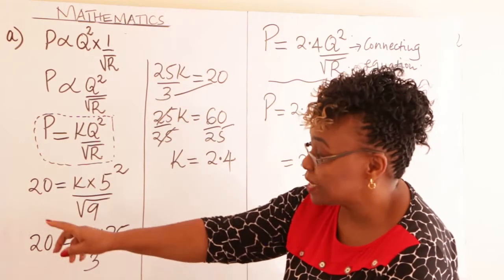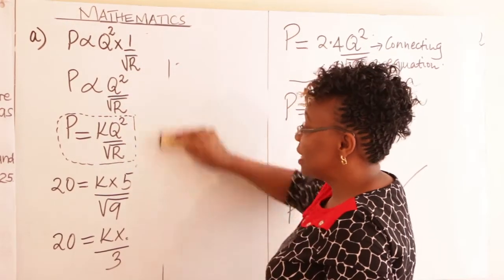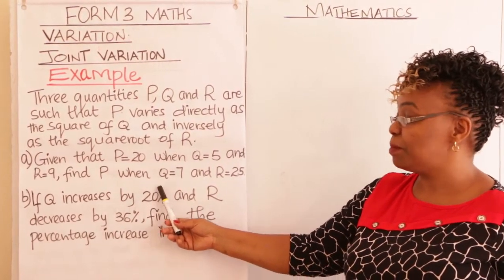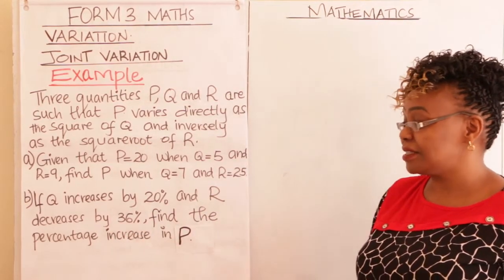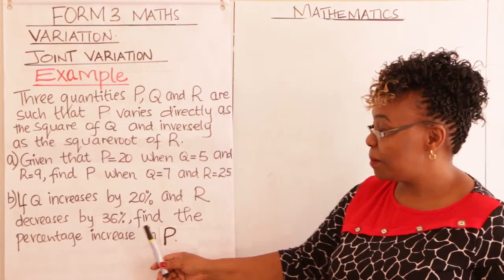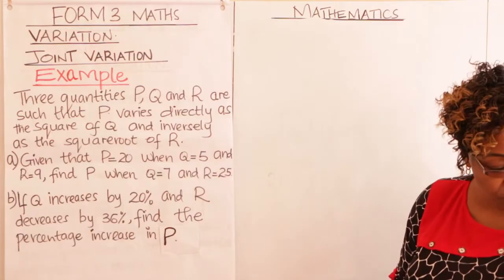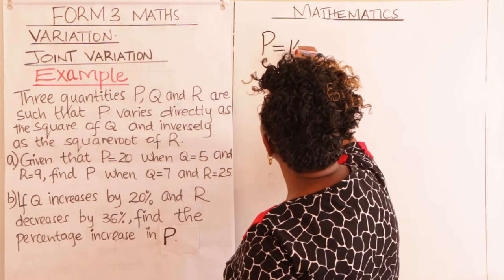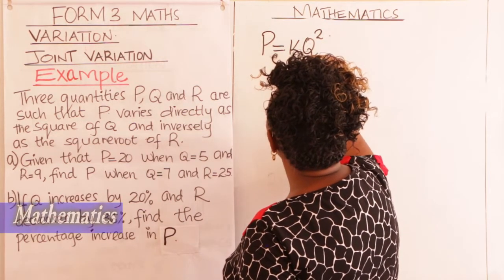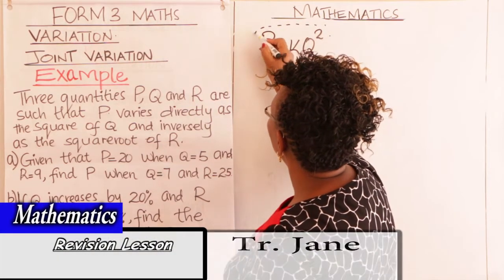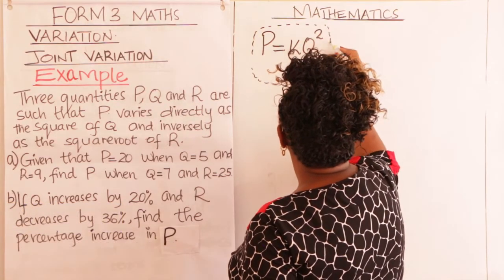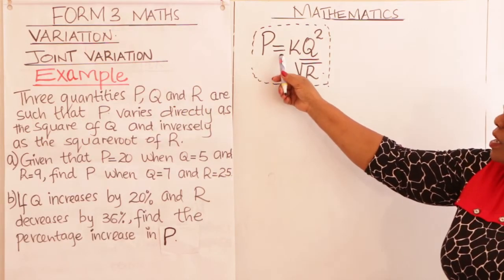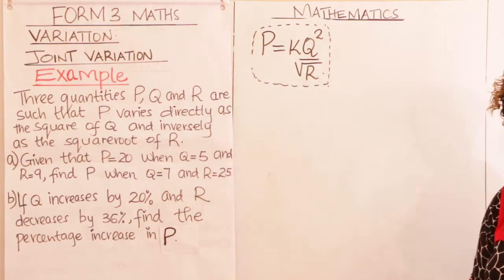Now we go to Part B, learner. This kind of question comes in KCSE exams. If Q increases by 20% and R decreases by 36%, find the percentage increase in P. We had the equation P = KQ² over square root of R from Part A — we start from there.